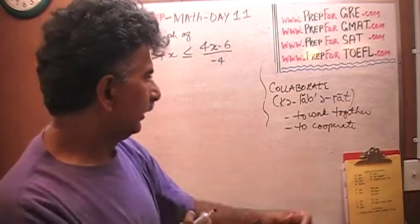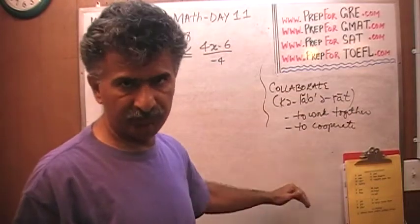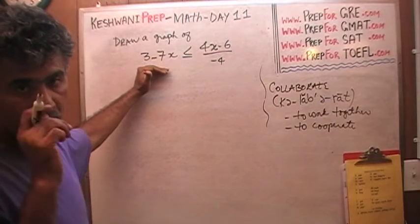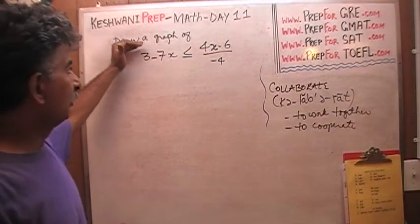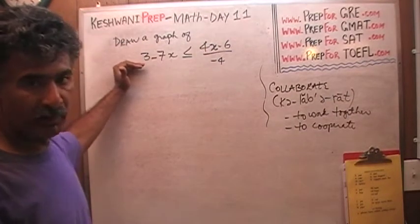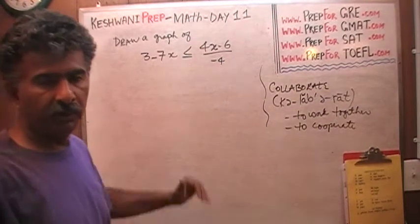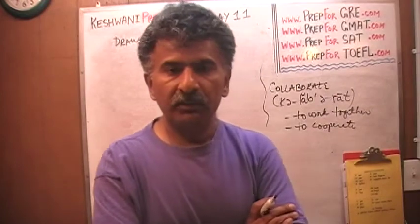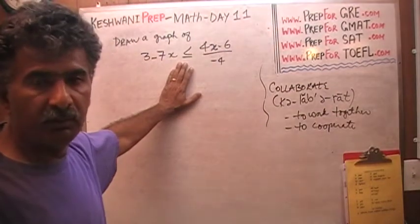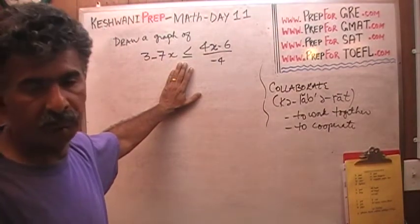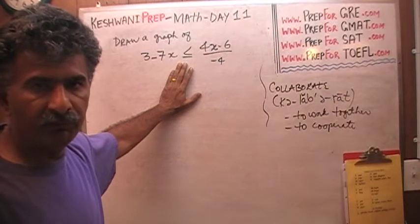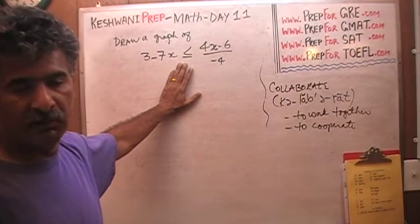In the real exam, they're going to give you five graphs — five answer choices A, B, C, D, E. Instead of saying 'draw a graph,' the question will read: which of the following represents the correct depiction of this inequality? In order to recognize which of the five graphs is the proper depiction, you first have to be able to draw it yourself.